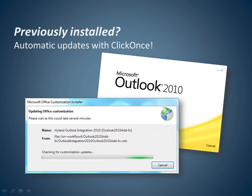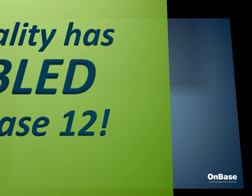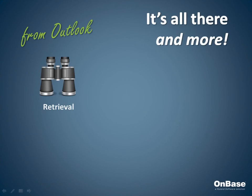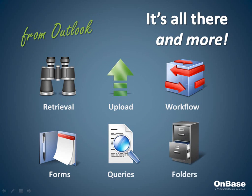And finally, if you are already using integration from Microsoft Outlook and already have it installed, it can be automatically upgraded to OnBase 12 using click-once — meaning that users don't even have to click again. So not only is the integration packed with features, but it's crazy easy to install and update. OnBase functionality available from Outlook has doubled with OnBase 12, which means there has never been a better time to start using OnBase integration from Microsoft Outlook, because form submission with approval is just one scenario.